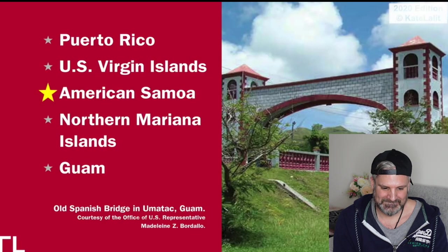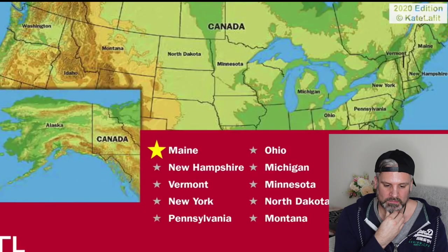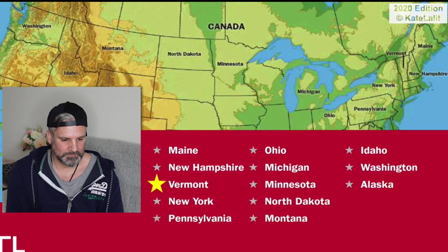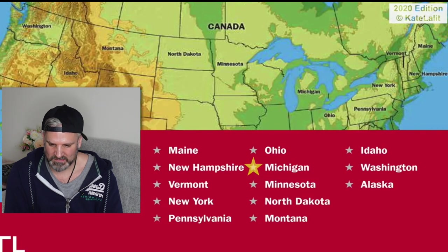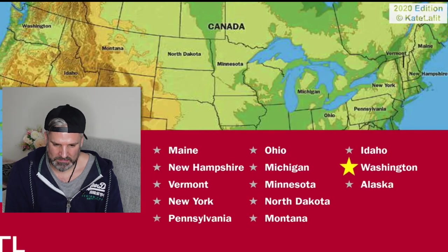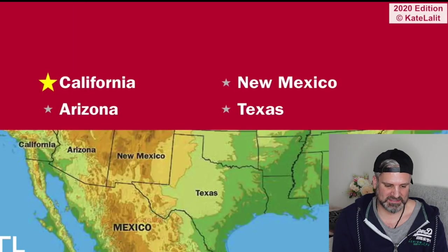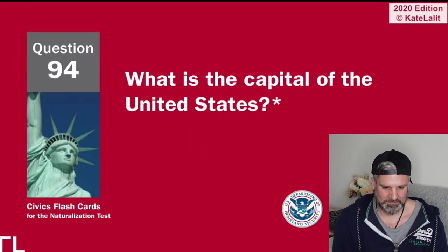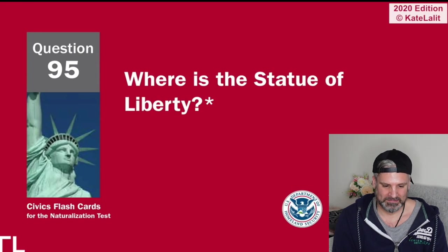US Virgin Islands, American Samoa, Northern Mariana Islands, Guam. Name one state that borders Canada. Idaho, Maine — yes, only just though — New Hampshire, Vermont, New York, Pennsylvania, Ohio, Michigan, Minnesota, North Dakota, Montana, Idaho, Washington, Alaska. Name one state that borders Mexico — Texas. California, Arizona, New Mexico.